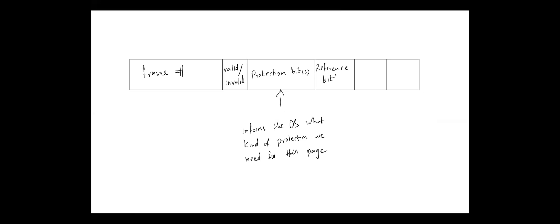The next bit that some operating systems use is the reference bit. If this bit is 0 then this page has not been referenced, and if it is 1 then this page has been referenced. A few operating systems use more than one reference bit.